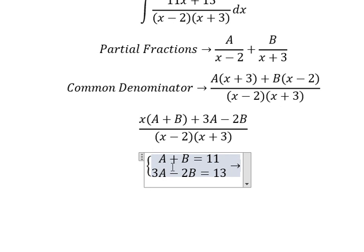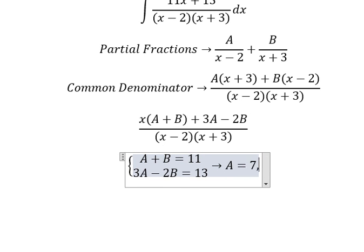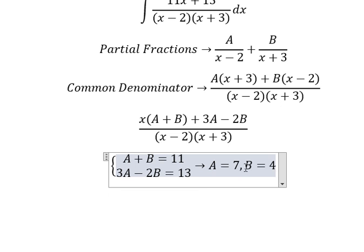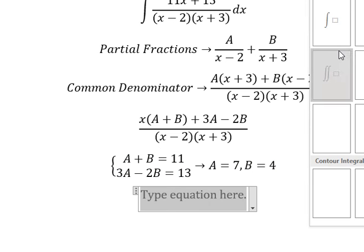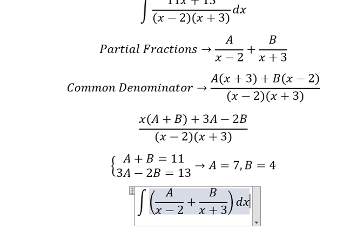Solving this system, we find that A equals 7 and B equals 4. We substitute these values into our partial fractions.